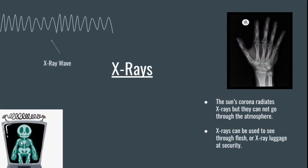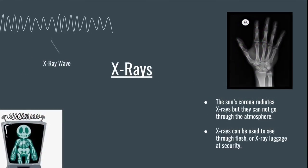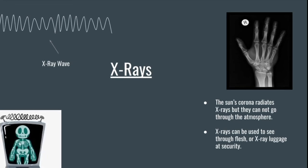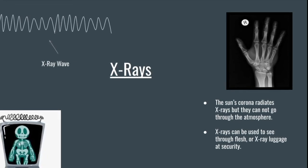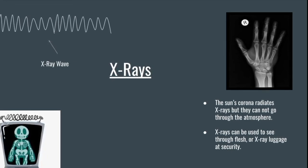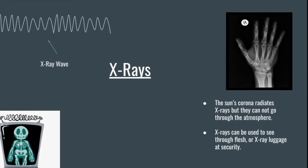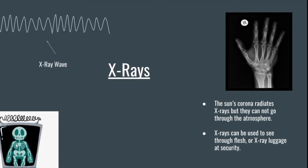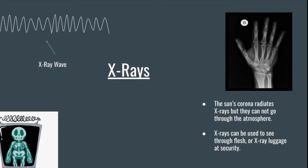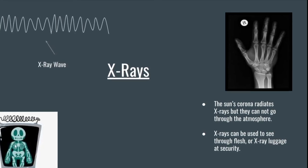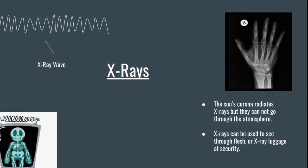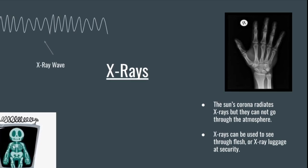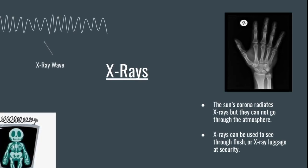X-rays have wavelengths from 0.01 nm to 10 nm and frequencies from 30 petahertz to 30 exahertz. X-rays come from the sun's corona and cannot go through Earth's atmosphere. They are used to see through flesh for injury diagnosis and to look through baggage at security.